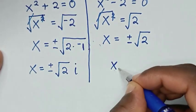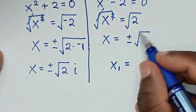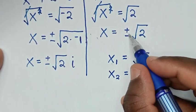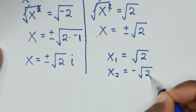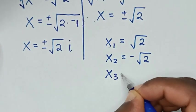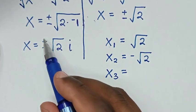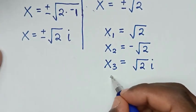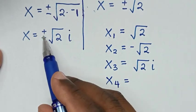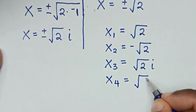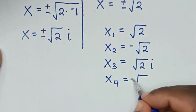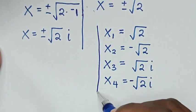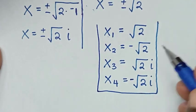Therefore the first value of x is positive square root of 2, the second value of x is negative square root of 2, the third value of x is positive square root of 2 times i, and the fourth value of x is negative square root of 2 times i. So these are all the four values of x in this problem.